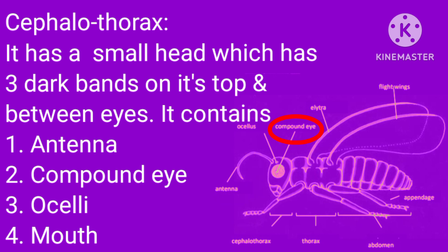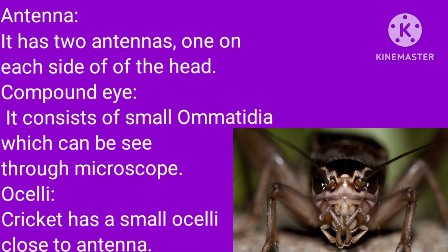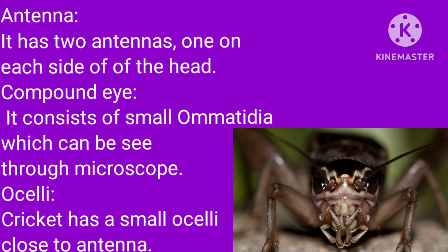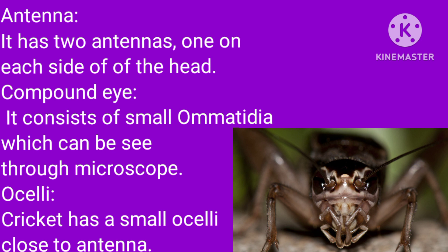It has two antennae, one on each side of the head. Compound eye: it consists of small ommatidia which can be seen through a microscope. Ocelli: the cricket has small ocelli close to the antennae.